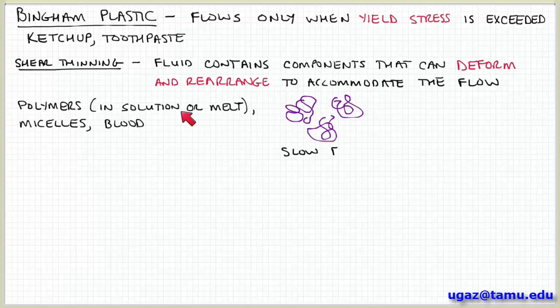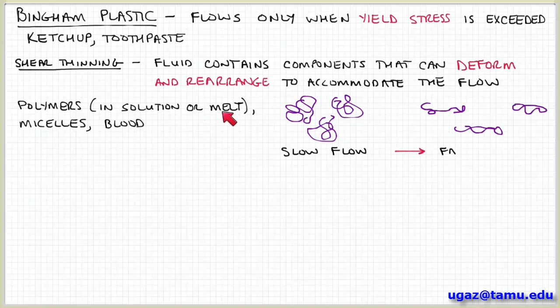And typical examples of these are polymers, which you may or may not know. A polymer is a long chain molecule made of repeat units, identical repeat units. So polymers either in solution or in the melt. Micelles, so surfactants like soaps, for example, that have their molecules that have two different sides, a hydrophobic and a hydrophilic side.